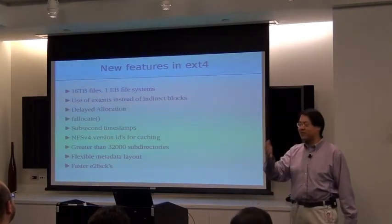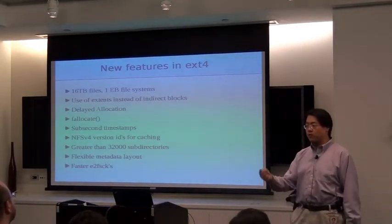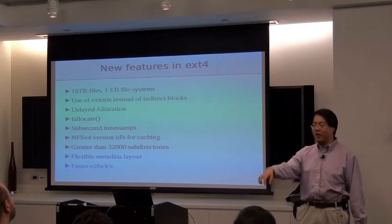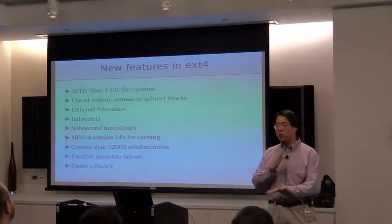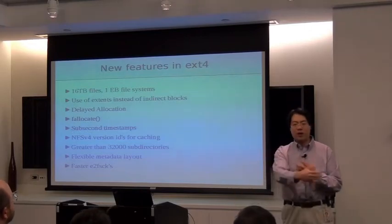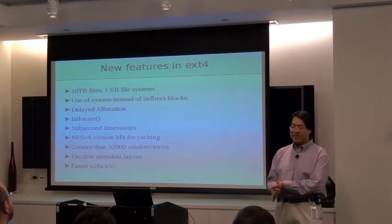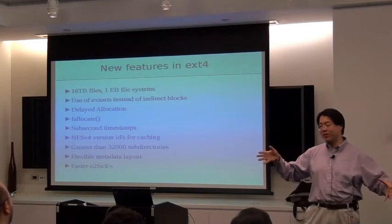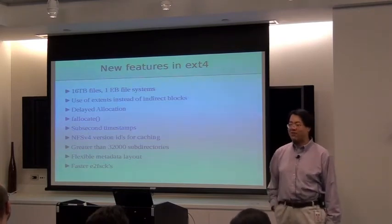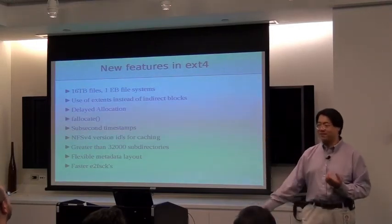We're using extents instead of indirect blocks. We also do something called delayed allocation: when you first write to a file using EXT4, we don't decide where on disk it will actually go. We wait until the last possible minute — either when the writeback daemon says it's time to write to disk, or when your application does an fsync. At that point we have a lot more information, like how big the file is. This also means that if you create a file, write a bunch of stuff, and then immediately delete it quickly enough, it may never hit disk.